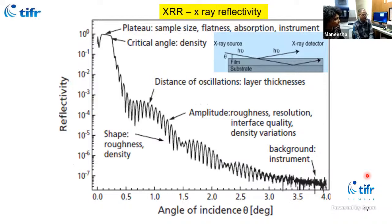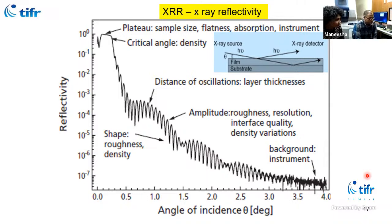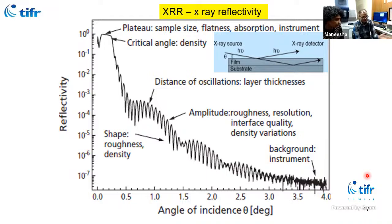X-ray reflectivity can give information like the critical angle, material density, film thickness, and surface roughness. The critical angle is very small — for gold it is about 0.7 degrees, for silicon only 0.22 degrees. For example, on silicon we have grown aluminum oxide of around 20 nanometers by ALD. The fringes in the reflectivity pattern give the thickness. Separation of the fringes gives thickness via Fourier transform or simulation. The rule of thumb: count fringes from 0 to 5 degrees and multiply by 2 to get the thickness.